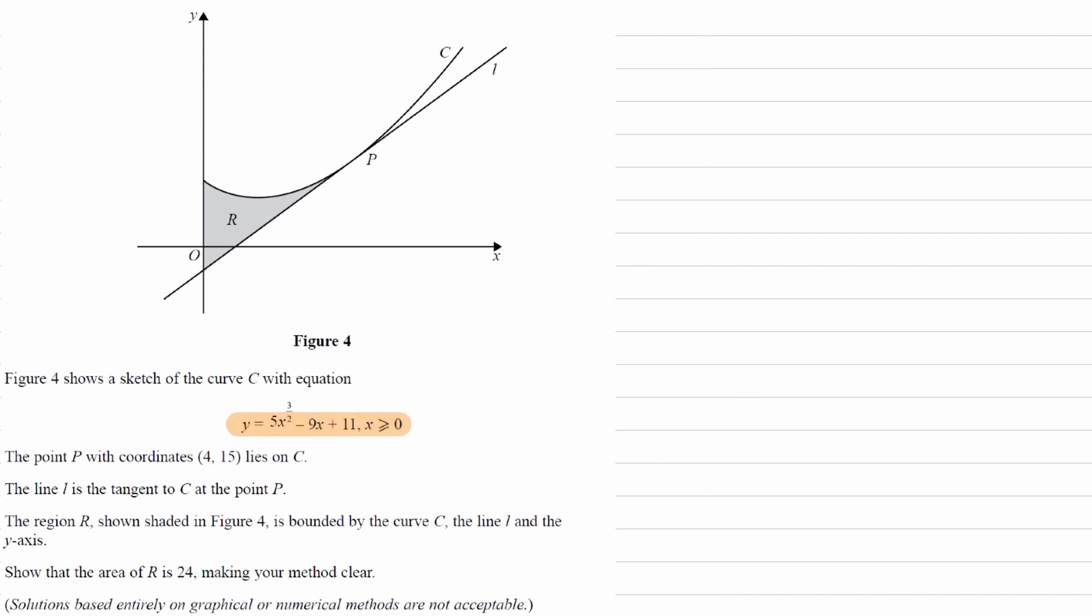The point P with coordinates 4, 15 lies on C. The line L is the tangent to C at point P. The region R, shown shaded in figure 4, is bounded by the curve C, the line L and the y-axis. Show that the area of R is 24.